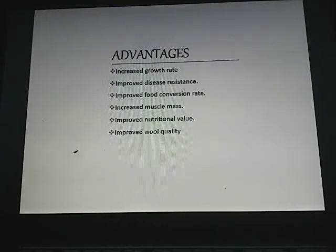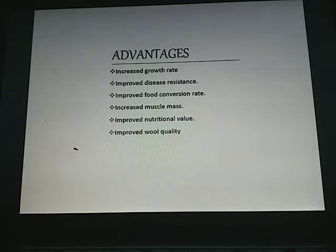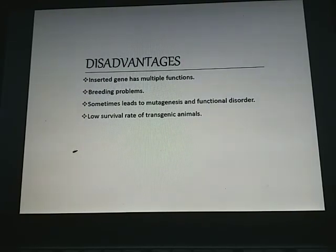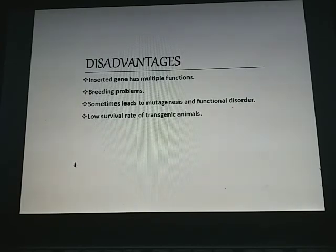Advantages of producing transgenic animals include increased growth rate, improved disease resistance, improved food conversion rate, increased muscle mass, improved nutritional value, and improved wool quality. Disadvantages include inserted genes having multiple unintended functions, many breeding problems sometimes leading to mutagenesis and functional disorders, and a low survival rate of transgenic animals.